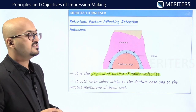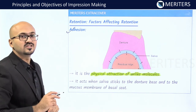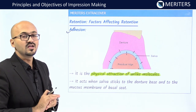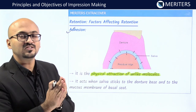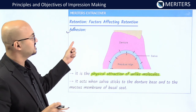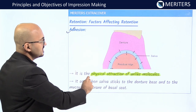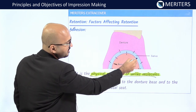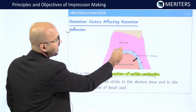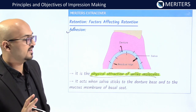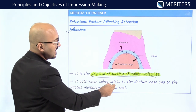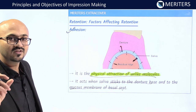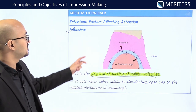Looking at physical factors affecting retention: first is adhesion. Adhesion is the physical attraction of unlike molecules. There is adhesion between the residual ridge and saliva at the junction, and between the saliva and the denture base. It acts when saliva sticks to the denture base and to the mucous membrane of the basal seat. Saliva acts as an intermediate buffer adhering to the mucosa as well as the denture base. This is adhesion between two dissimilar kinds of materials or molecules.